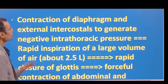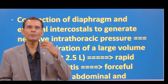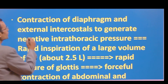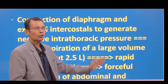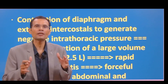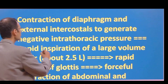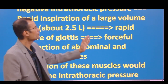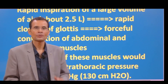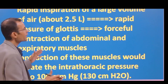Now let's see the mechanism of cough. First, there is inspiration — contraction of the diaphragm and external intercostals generates negative intrathoracic pressure. The lungs distend and there is rapid inspiration of a large volume of air, almost up to 2.5 liters. Remember, our normal tidal volume is 500 ml, but in this case a large amount of air is inspired.